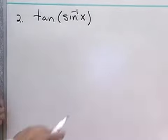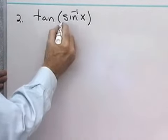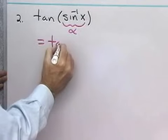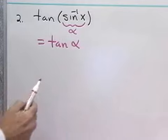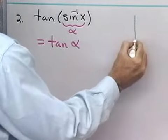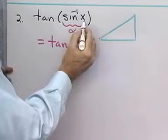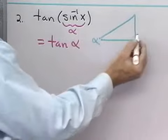I want to find the tangent of the inverse sine of x. Well, let's see what this is. Let's let this be angle alpha. And so, what I'm looking for is the tangent of just angle alpha. Well, let's see what we know about angle alpha. Angle alpha is the inverse sine of x means that alpha is an angle whose sine is x.